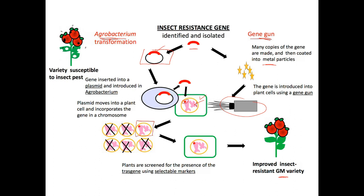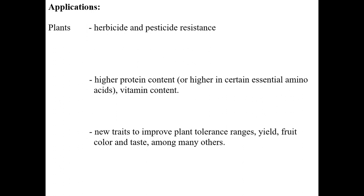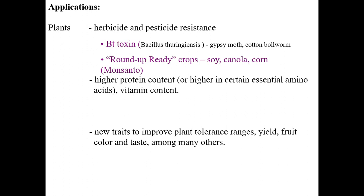This has been done for many different things. One major application is herbicide and pesticide resistance. Bt toxin — isolated from the soil bacterium Bacillus — is introduced via Agrobacterium into plants, giving them resistance to pests like the gypsy moth and the cotton bollworm. Another huge one is Roundup-ready crops. Roundup is a herbicide produced by the multinational company Monsanto, and crops including soy, canola, and corn have been genetically modified to be resistant to it — you spray the herbicide, it kills weeds but the crop survives.